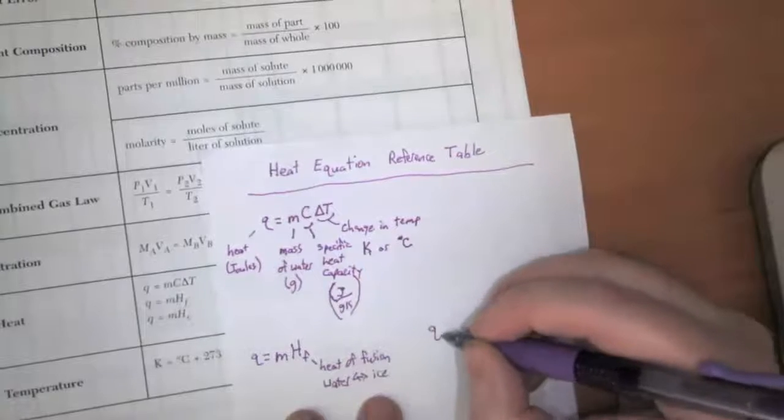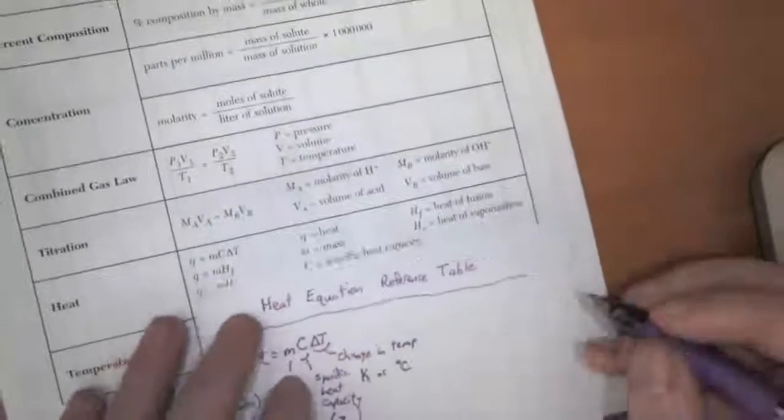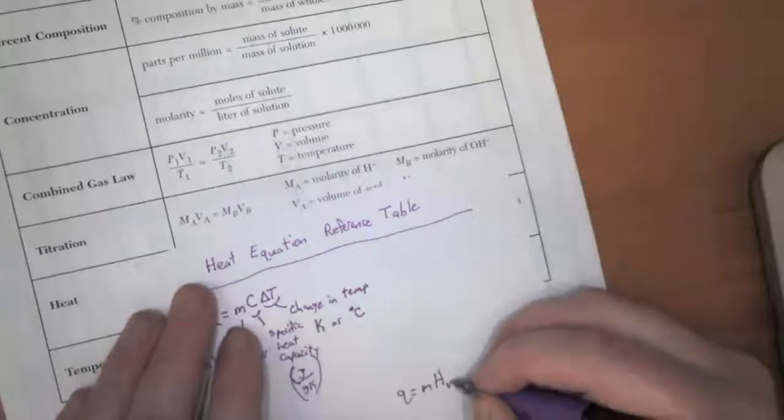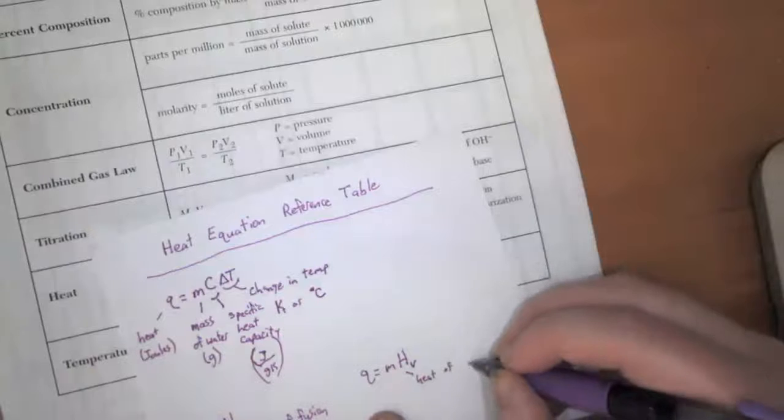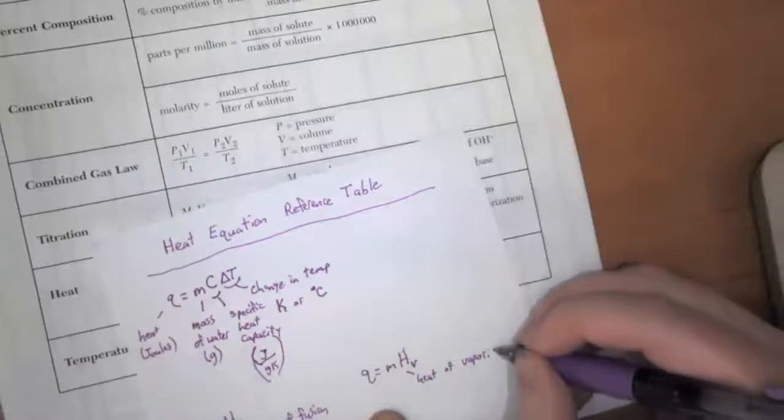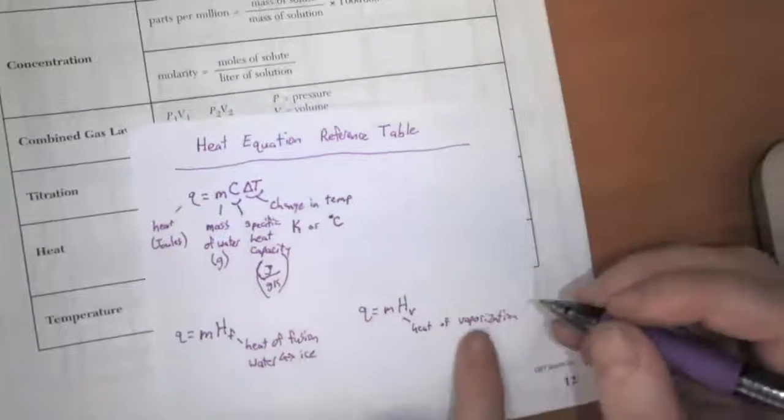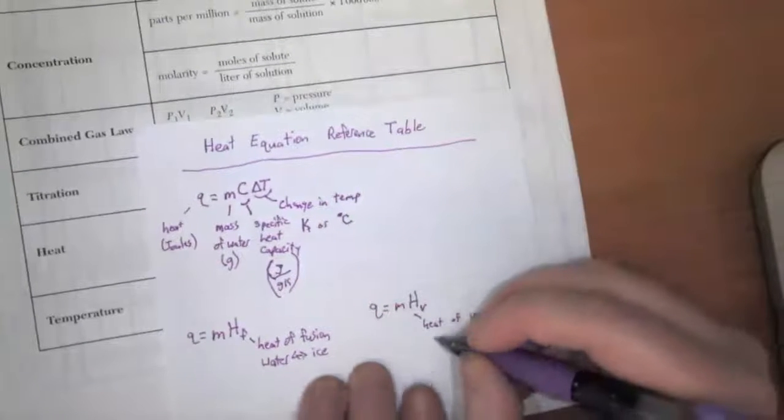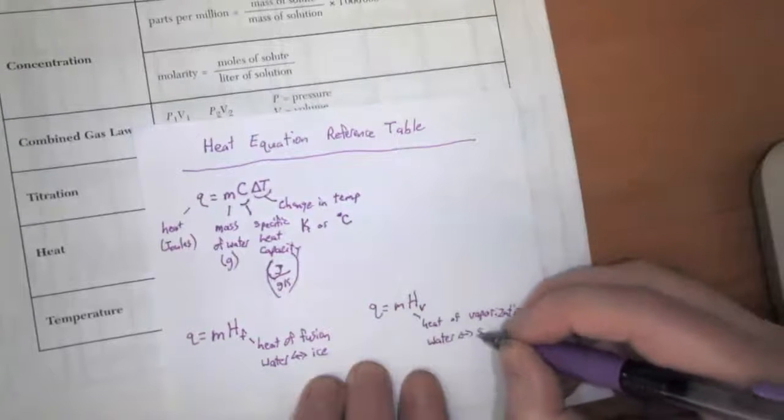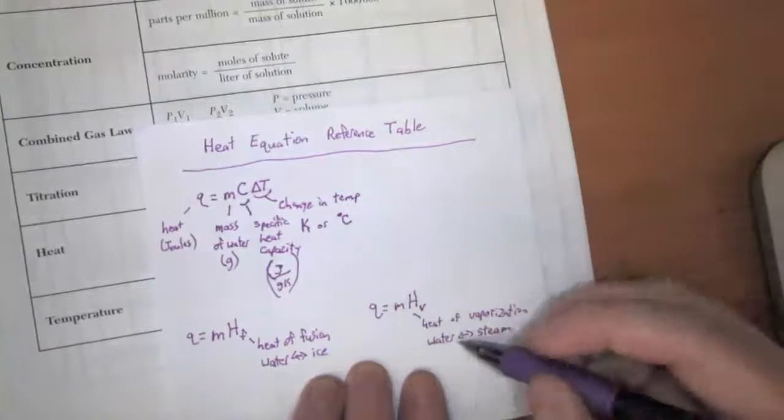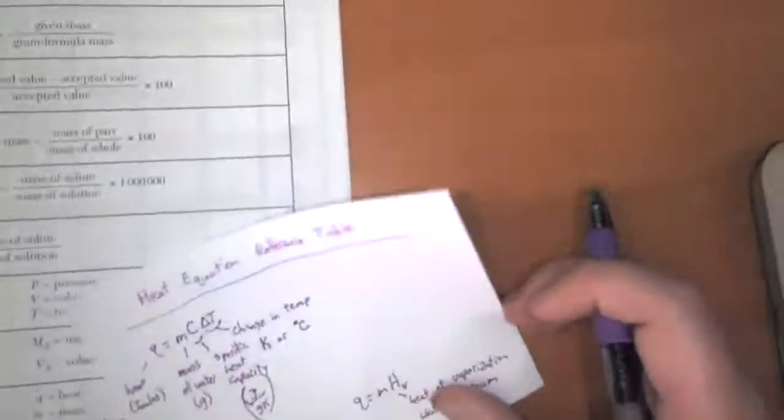And then the last equation is Q is equal to mass times the heat of vaporization. Heat of vaporization. This is talking about when water turns to ice and vice versa. What do you think vaporization would be? Well, that's when water goes back and forth between becoming liquid and becoming steam, and that stays at 100 degrees Celsius.